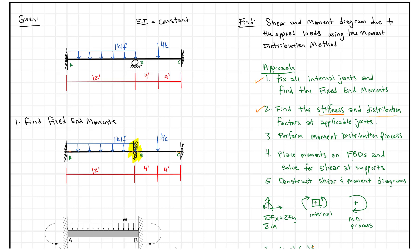We are going to take the next step in this problem to construct the shear and moment diagrams due to the applied loads using the moment distribution method. We've already found fixed end moments, done our stiffness distribution factors, and last time we did the moment distribution process. What's next is we're going to place these moments on free body diagrams and solve for shear at the supports.